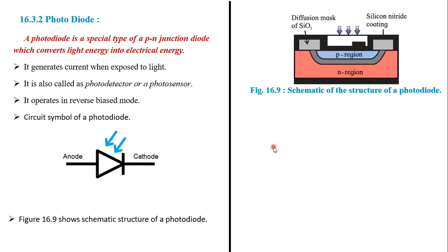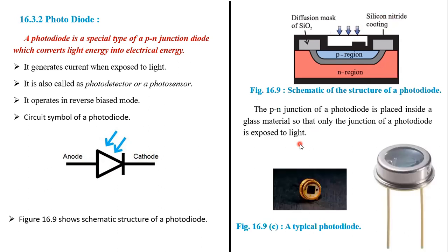Now the schematic structure of the photodiode. Here you can see the p-type and n-type regions. This is the window where the light is incident. This is the actual view — there is the photodiode inside and this is a glass window through which light can be incident on it.